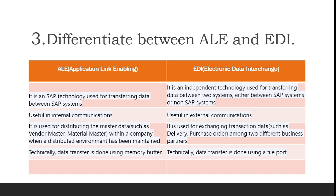ALE is used for distributing master data such as vendor master and material master within a company when a distributed environment has been maintained. Whereas EDI is used for exchanging transaction data such as delivery and purchase orders among two different business partners. For example, if one company is running an Oracle system and the other is using SAP, we use EDI — Electronic Data Interchange — to communicate between these two businesses. Technically, in ALE data transfer is done using memory buffer whereas in EDI data transfer is done using a file port.